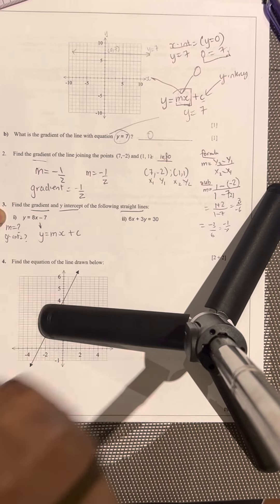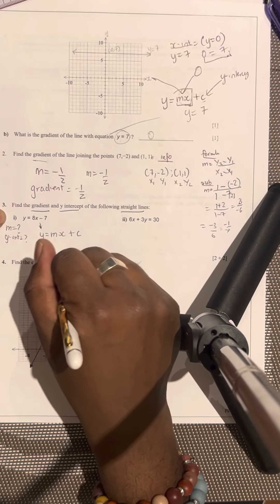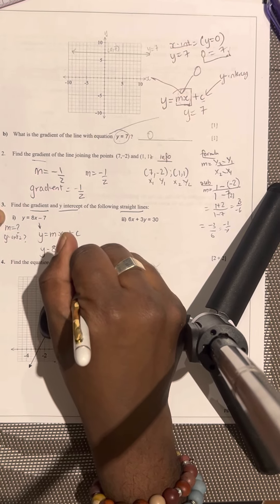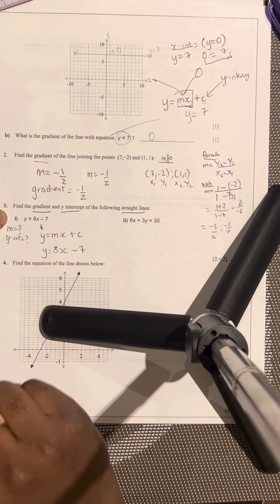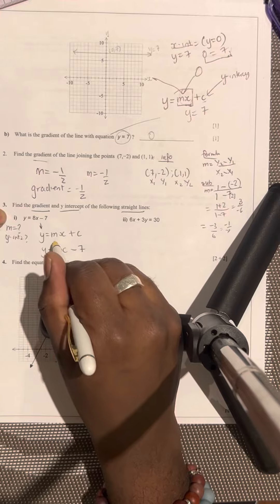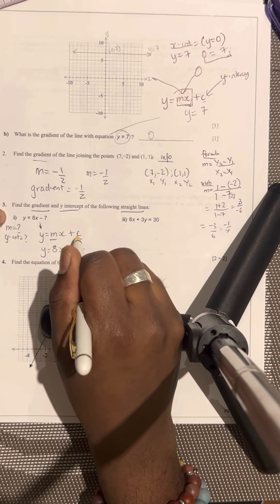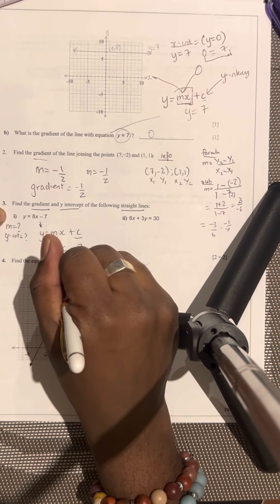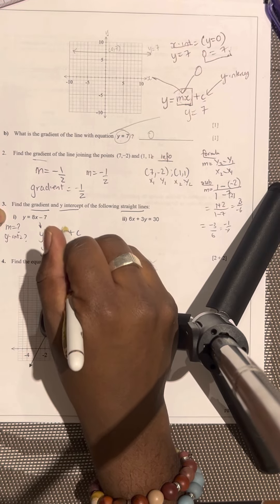Let's write down our equation that they've given us. y is equal to 8x minus 7. So the next part is just by identifying. We know that that's the gradient, that's your y-intercept. So essentially, your gradient is going to be what? 8,